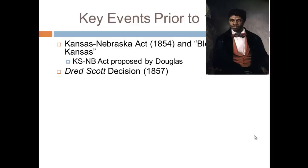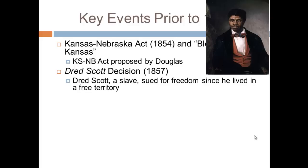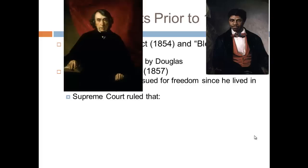In 1857, we have one of the most famous court case decisions ever — the Dred Scott decision — in which Dred Scott, a slave, sued his owner's wife for freedom. He sued for freedom since he lived in a free territory; he lived in Illinois and Wisconsin, so on that basis he said he should be free. It goes all the way to the Supreme Court, which is under the control of Chief Justice Roger B. Taney at this time.